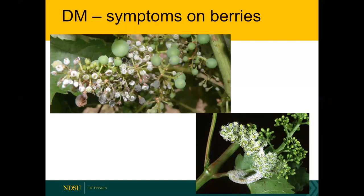Downy mildew can affect berries as well. As berries mature they become less susceptible to infection by spores, but at all growth stages they're susceptible to direct infection through the pathogen migrating through the plant tissue. Looking at that lower left photo, the pathogen is actually traveling — spreading mechanically down the tissue from the berry cluster back through the pedicle. When berries do become infected, they're very small in size and eventually they will become brown and die.